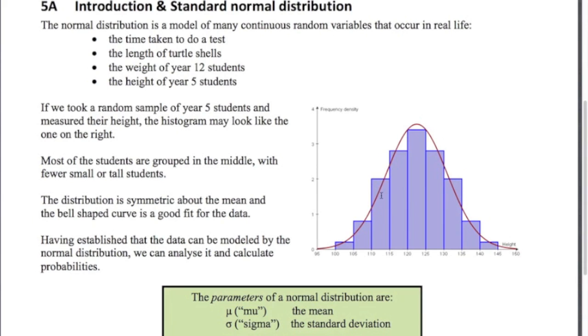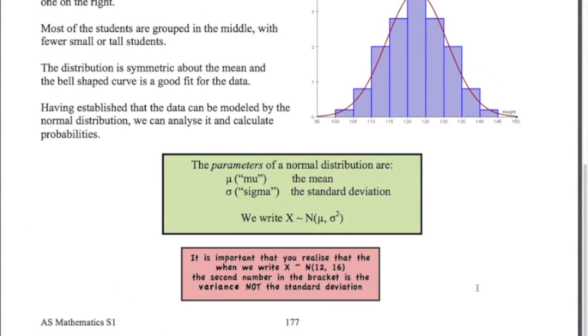This bell-shaped curve is very familiar to statisticians. It's probably the most important curve in statistics and it's called the normal distribution or Gaussian distribution after Carl Gauss. The parameters of this distribution are the mean, mu, and the standard deviation, sigma.